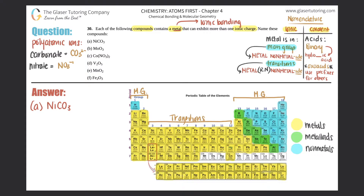Transition metals do not have a fixed oxidation state trend. For main group metals: group 1 is always +1, group 2 is always +2, there's no trend for transitions, group 13 is +3, group 14 is ±4, and then working backwards: −3, −2, −1, 0. Those are the charges of each atom in that group when they form a compound.